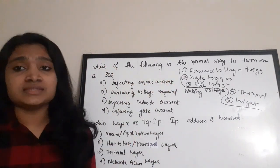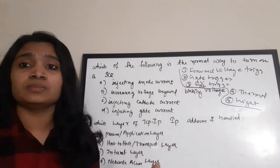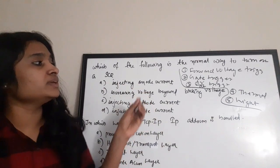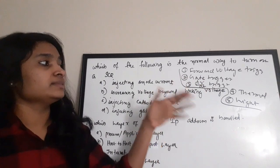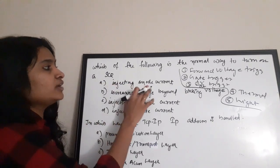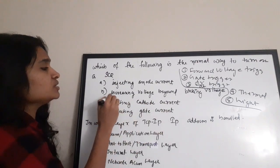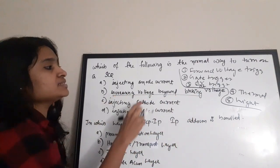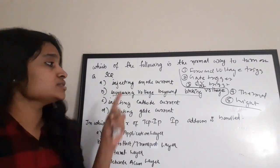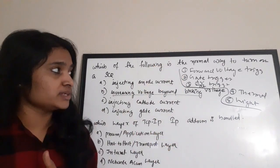Forward voltage triggering applies a voltage greater than the blocking voltage. Gate triggering applies a specific current to the gate terminal. dv/dt triggering applies a voltage varying with respect to time. Thermal and light triggering are the other methods. The most basic or normal method is forward voltage triggering — increasing voltage beyond the blocking voltage. Options: injecting anode current, increasing voltage beyond blocking voltage (B), injecting cathode current, injecting gate current. The correct answer is option B.